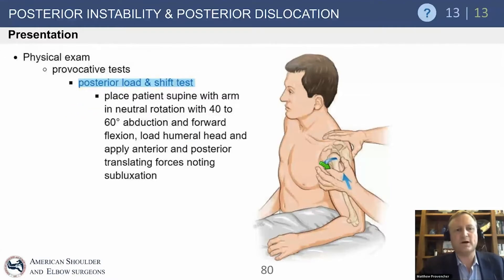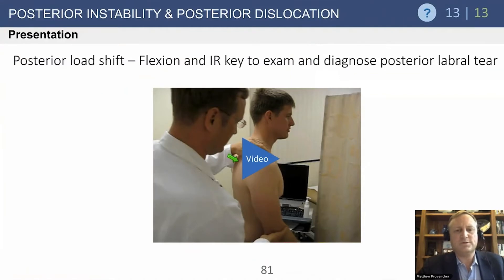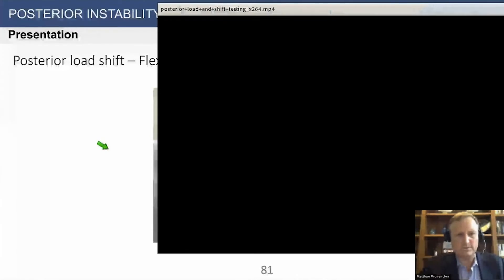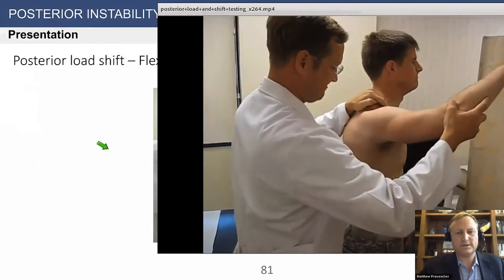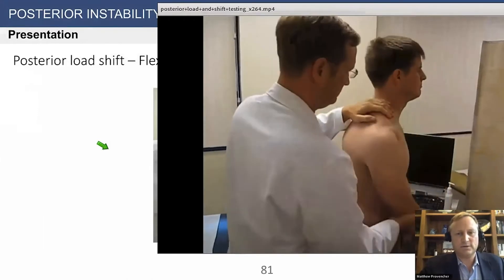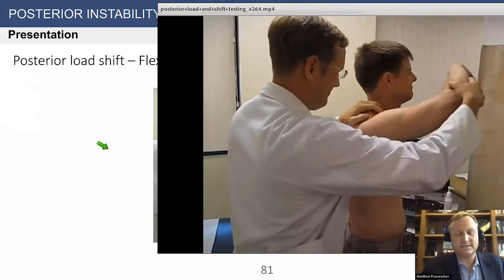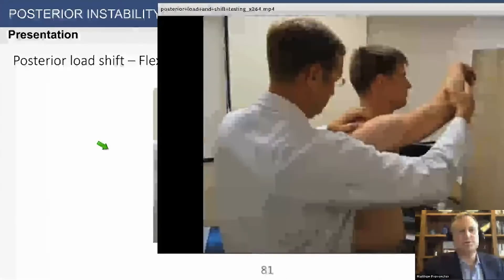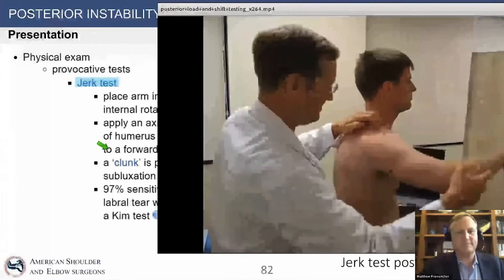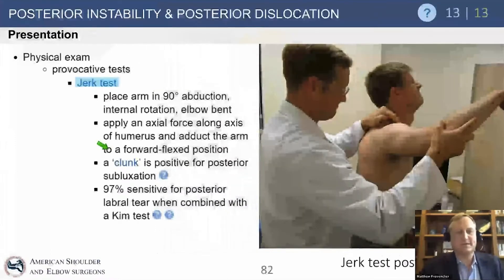We want a positive posterior load and shift test. Hold the scapula stable from behind — clothes must be off to palpate the scapula — and move the humeral head back and forth to stress the inferior capsule posteriorly. The arm is in flexion and internal rotation, straining the posterior band of the inferior glenohumeral ligament and the posterior labrum. You can also get a click as the humeral head subluxes over the posterior rim. The patient does not like this — it's very painful.